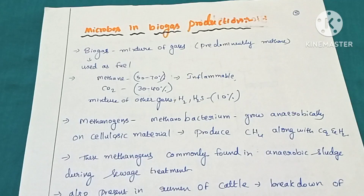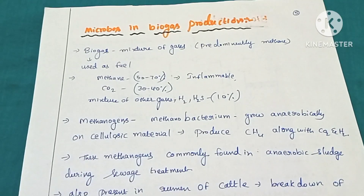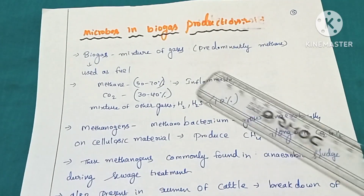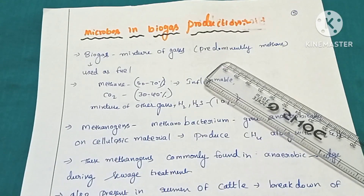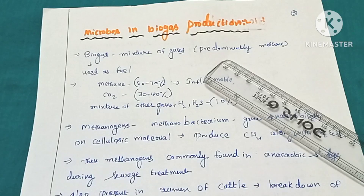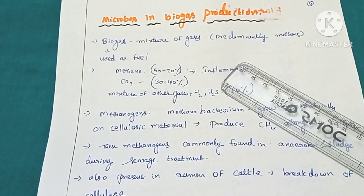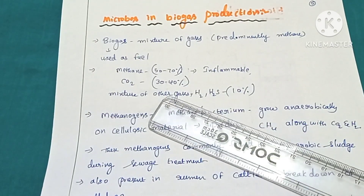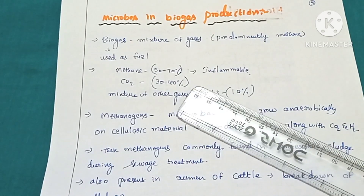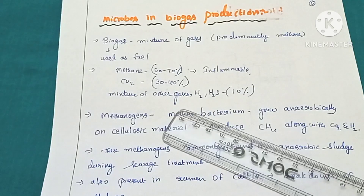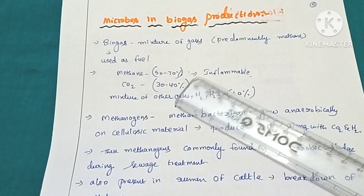Now we will see how the microbes are involved in biogas production and what biogas is. Biogas is a mixture of gases — methane, carbon dioxide, and hydrogen or hydrogen sulfide. The major gas present in biogas is methane. The percentages are: methane is 50 to 70 percent, which is inflammable; carbon dioxide is 30 to 40 percent; and hydrogen or hydrogen sulfide is 10 percent.